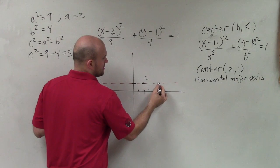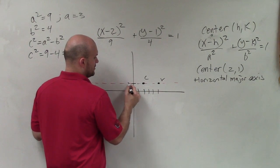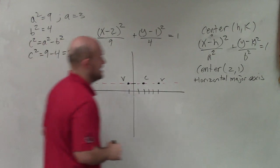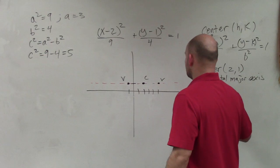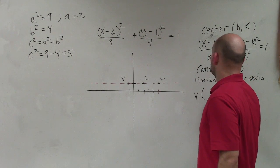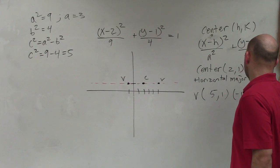If my center is at (2,1), I just need to go three units to the right to find one vertex and three units to the left to find the other vertex. So I'll go 1, 2, 3—that's a vertex. And then to the left, 1, 2, 3—that's a vertex. So my vertices are now at (5,1) and (-1,1).